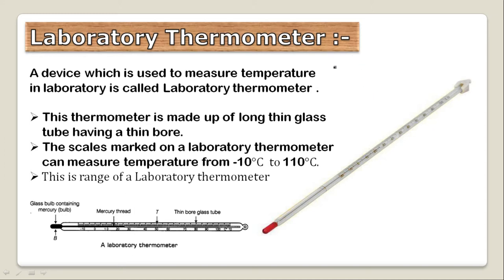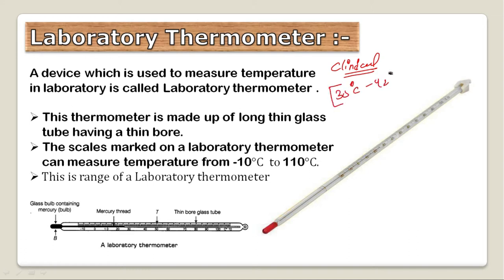What do we call a clinical thermometer? In a clinical thermometer, the temperature range is from 35 degrees Celsius to 42 degrees Celsius. This is a low-range thermometer — we do not measure a much wider range with it.